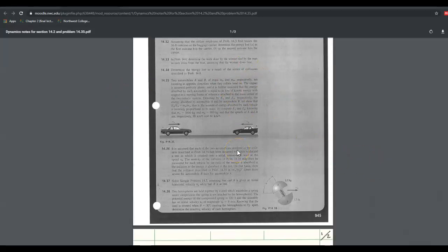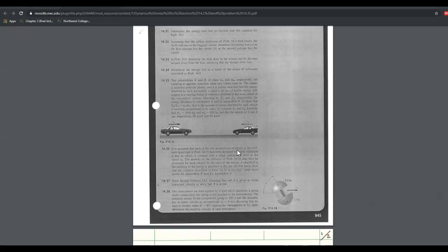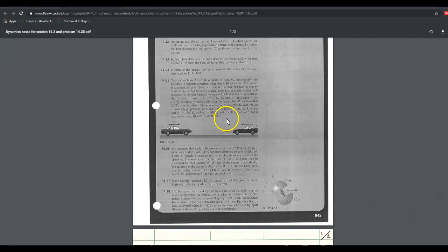So we have two automobiles A and B. They have masses that are different, and they're traveling in opposite directions when they collide head on. The impact is assumed to be perfectly plastic, and it is further assumed that the energy absorbed is equal to its loss of kinetic energy with respect to the moving frame of reference attached to the center of mass of the two vehicle system. So the variables E sub A and E sub B are the energy absorbed by automobiles A and B. And they ask us to show that that ratio of energy absorbed is equal to the inverse of the ratio of the masses, meaning that the amount of energy absorbed is inversely proportional to mass. Bigger vehicles absorb less energy. Smaller vehicles absorb more energy. Then we compute E A and E B. All right, they give you some masses and they give you speeds.